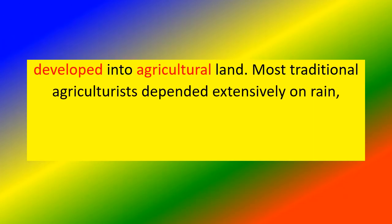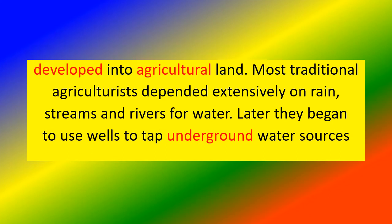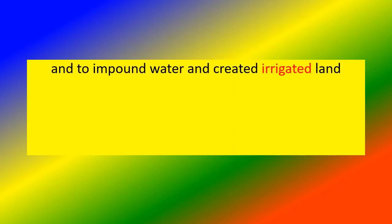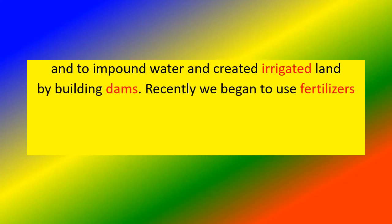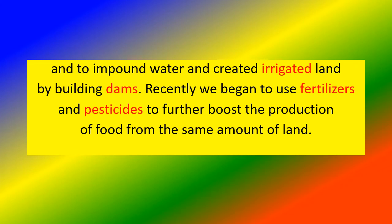Most traditional agriculturists depended extensively on rain, streams and rivers for water. Later they began to use wells to tap underground water sources and to impound water, creating irrigated land by building dams. Recently we began to use fertilizers and pesticides to further boost the production of food from the same amount of land.